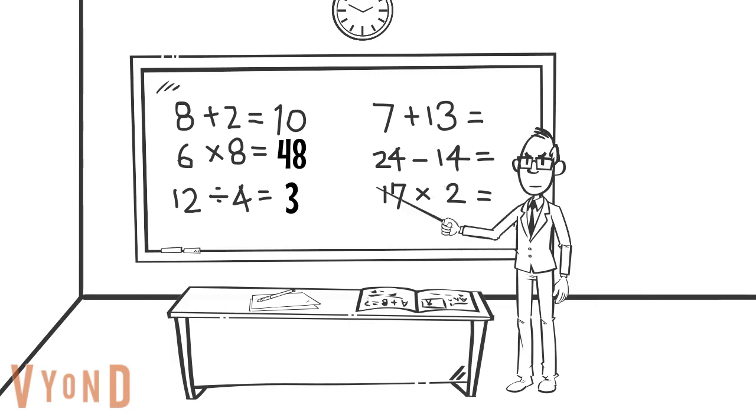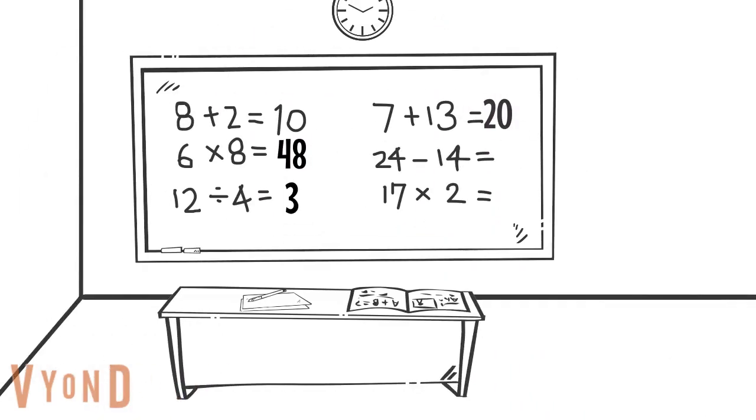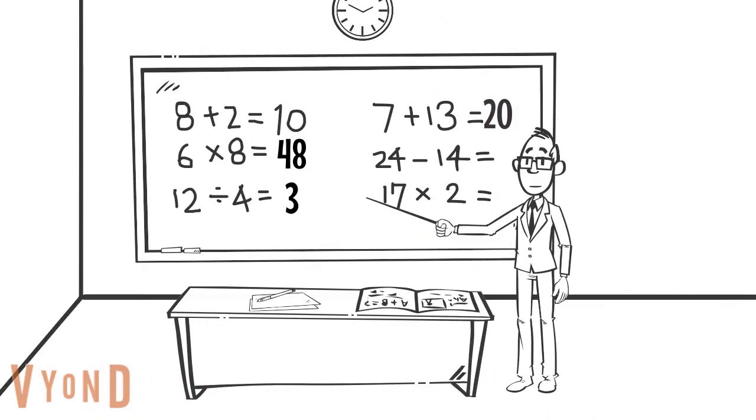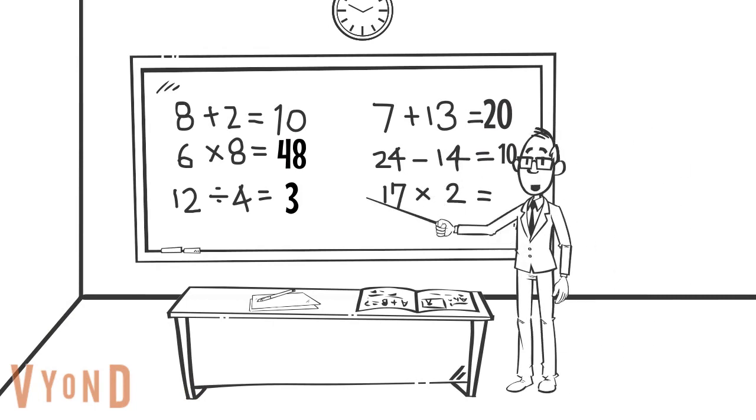Good. So anyways, guys, what is twenty-four minus fourteen equal? Ten. You are correct.